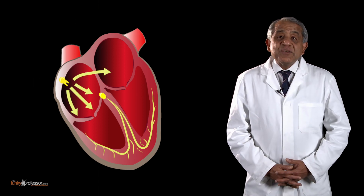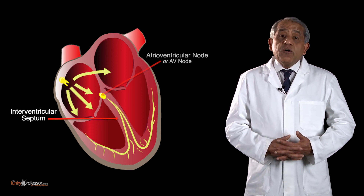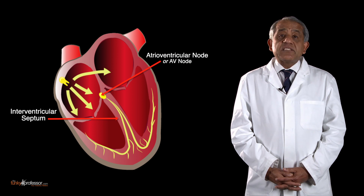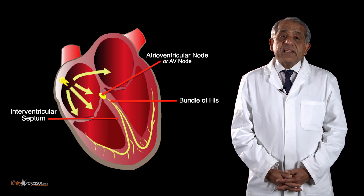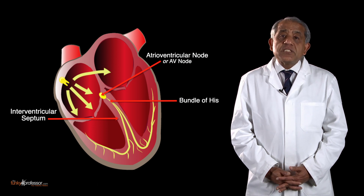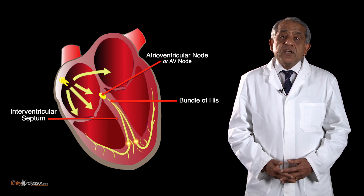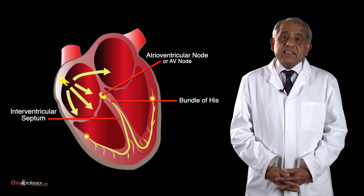Running into the interventricular septum from the AV, or atrioventricular, node is a bundle of conducting fibers called the bundle of His. Within the interventricular septum, the bundle of His breaks up into right and left branches, respectively for the right and left ventricles.